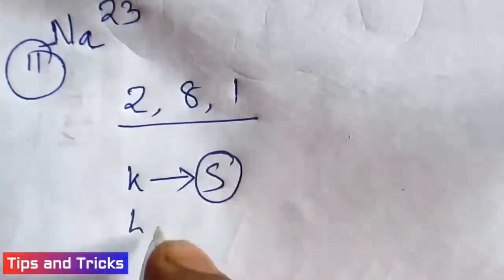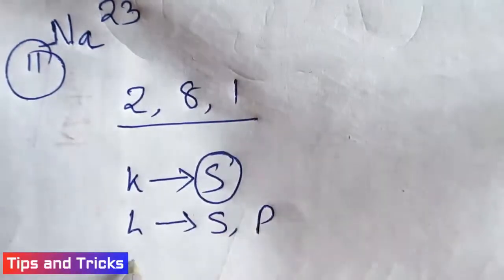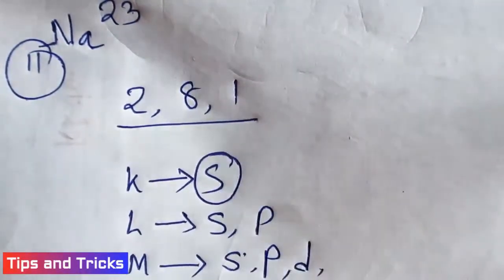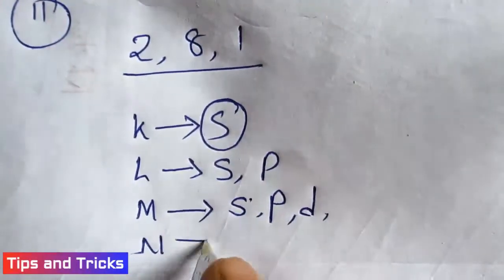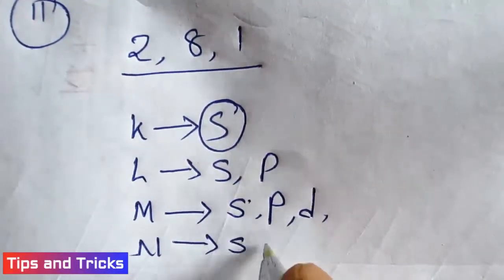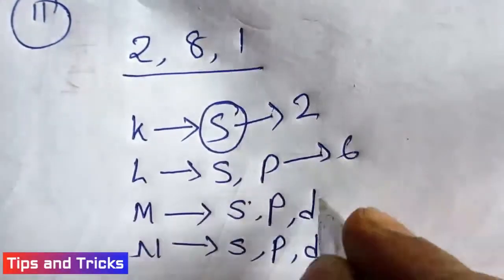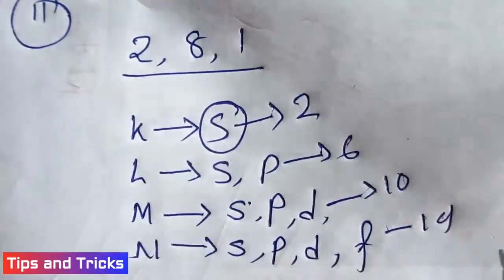K has s, L has s and p, M has s, p, and d, and N has s, p, d, and f. S has a capacity of 2 electrons, p has 6 electrons, d has 10, and f has 14 electrons.